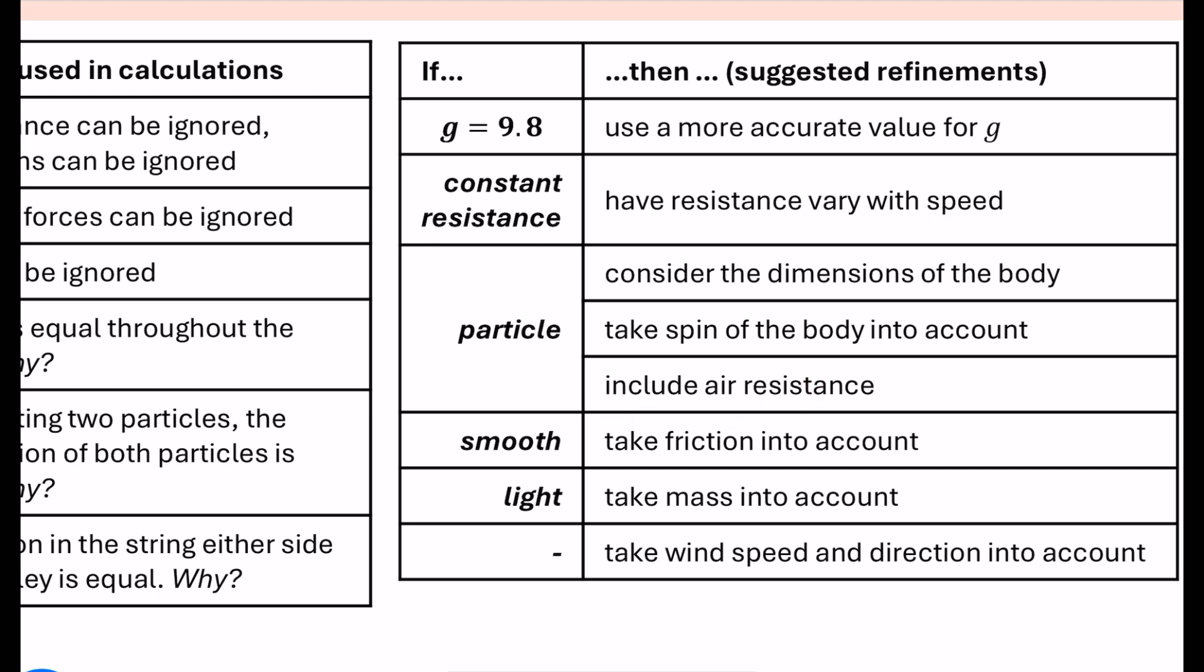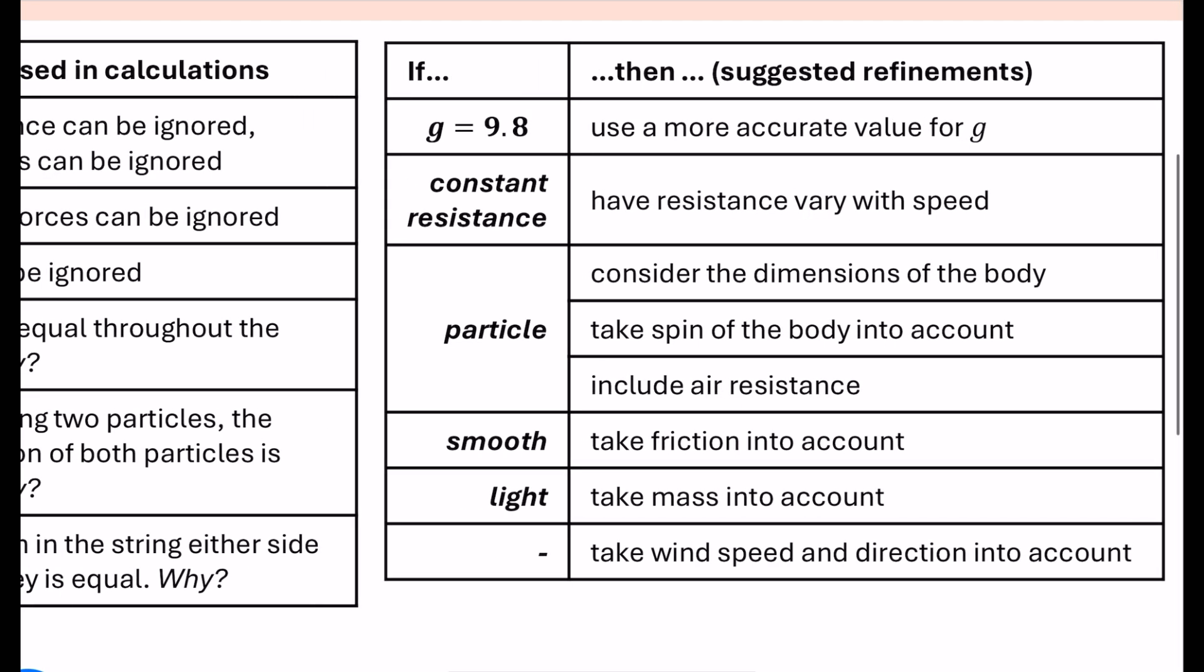Sometimes they've done this very sneaky thing in Edexcel recently. They've said apart from including air resistance, what else could we do to refine the model? So that's why I'm giving you a list of these other ones to think about. Of course, if something is smooth, you can say that's not going to be likely. Let's take friction into account. If something is light, we can say take its mass into account. That could be the string. That could be a different particle, whatever it might be.